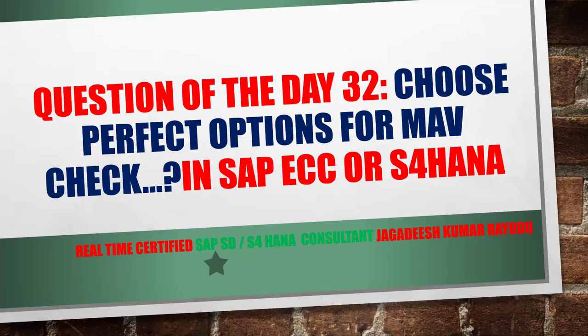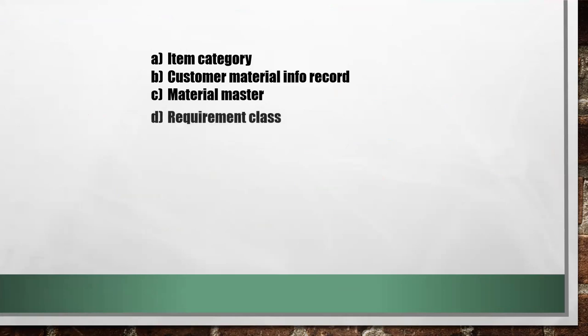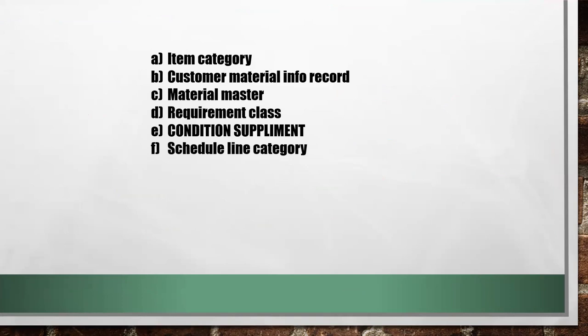Hello folks and students, welcome back to another question of the day — Question 32. Choose the perfect options for MVV. MVV means Material Availability Check in SAP ECC or S4HANA. The options are: A — Item Category, B — Customer Material Info Record, C — Material Master, D — Requirement Class, E — Condition Supplement, F — Scheduling Category, G — All of the Above.